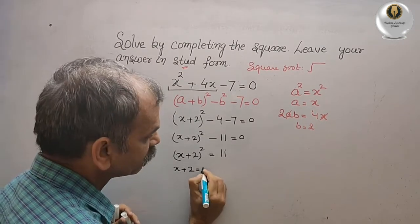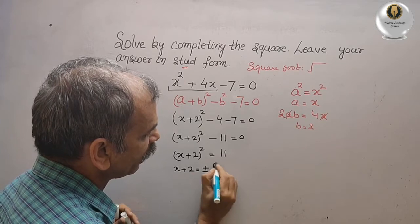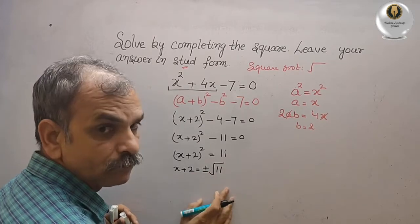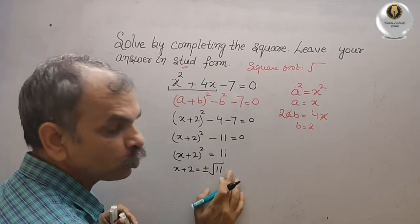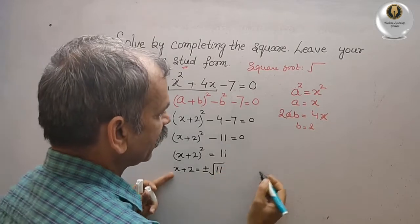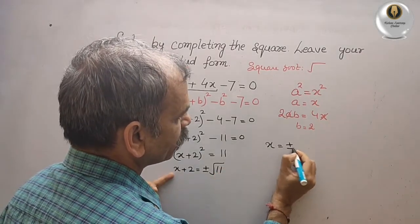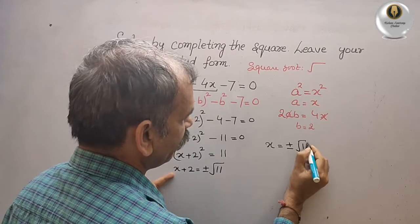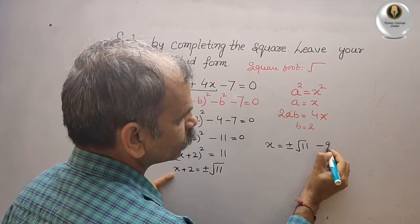x + 2 = ±√11. Now bring this 2 to this side, we will get x = ±√11 - 2.